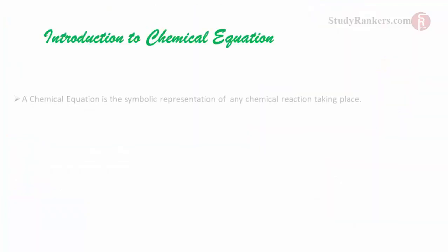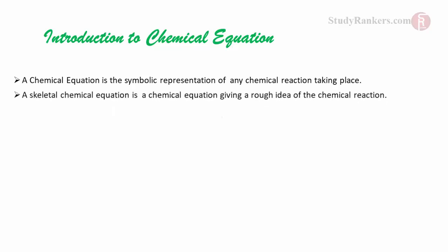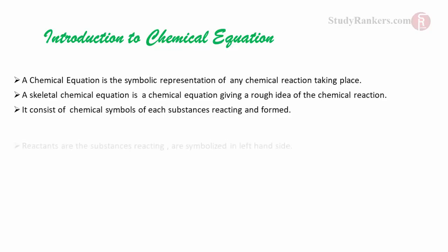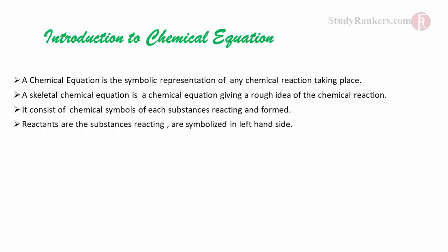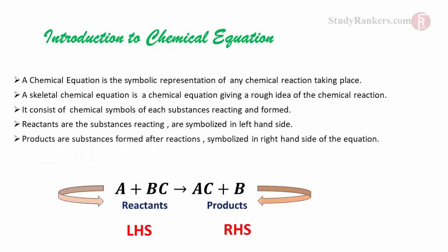A chemical equation is the symbolic representation of any chemical reaction taking place. A skeletal chemical equation gives a rough idea of the chemical reaction. It consists of chemical symbols of each substance reacting and formed. Reactants are the substances reacting, symbolized on the left-hand side. Products are the substances formed after reaction, symbolized on the right-hand side of the equation.